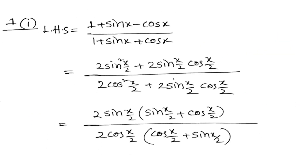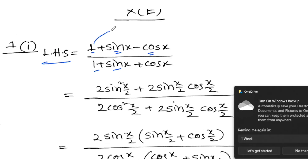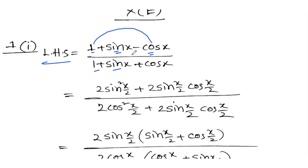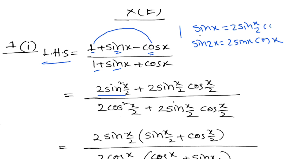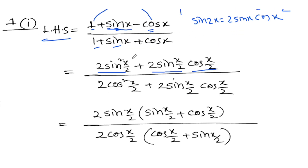Okay, I'm going to start making the solution now. I'm going to take the left-hand side initially. So the left-hand side is: 1 plus sin x minus cos x, divided by 1 plus sin x plus cos x. Now, 1 minus cos x is equal to 2 sin squared (x/2). And sin x can be written as 2 sin(x/2) cos(x/2).